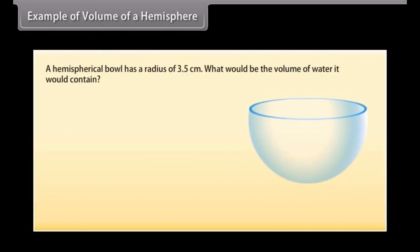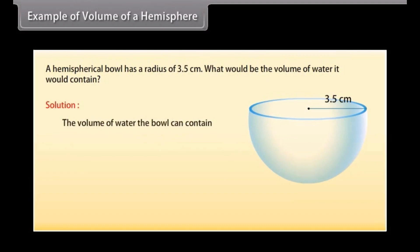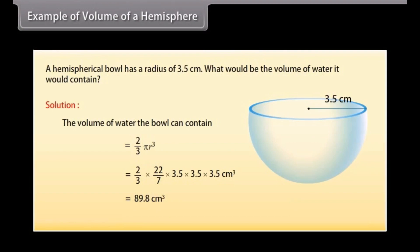A hemispherical bowl has a radius of 3.5 cm. What would be the volume of water it would contain? The volume of water the bowl can contain is (2/3) × π × R³ = (2/3) × (22/7) × 3.5 × 3.5 × 3.5 cm³, which equals 89.8 cm³.